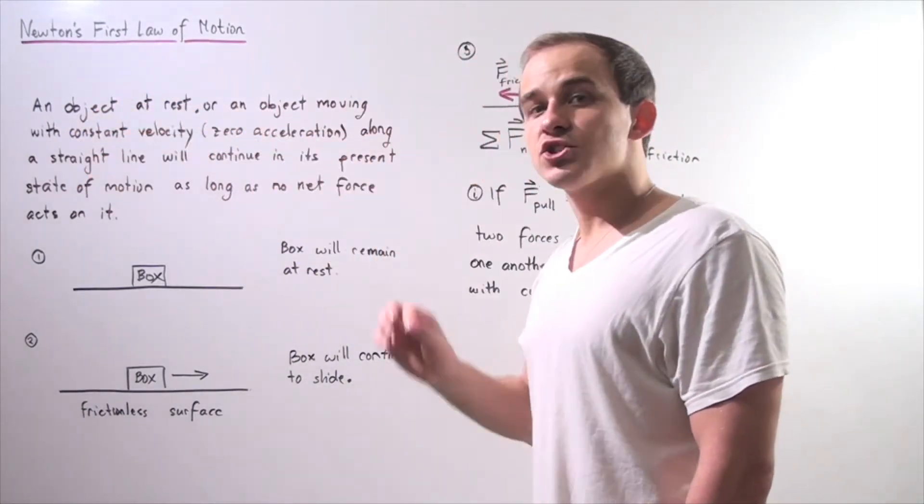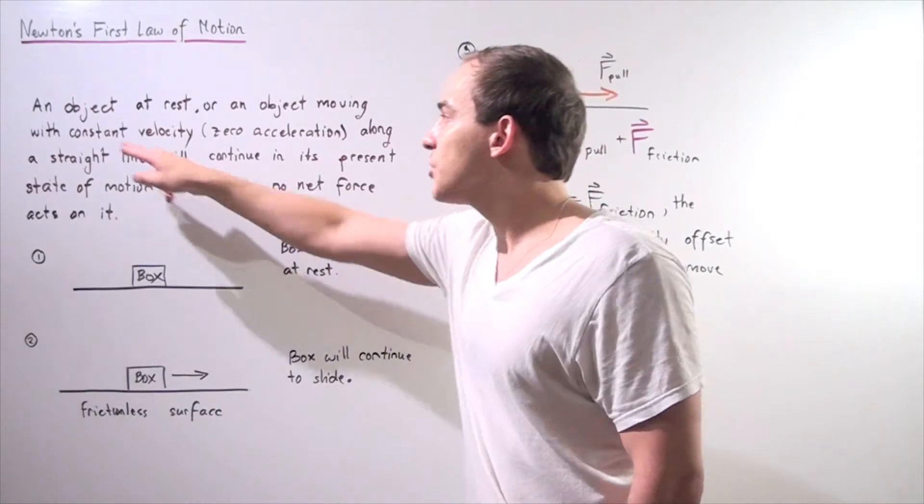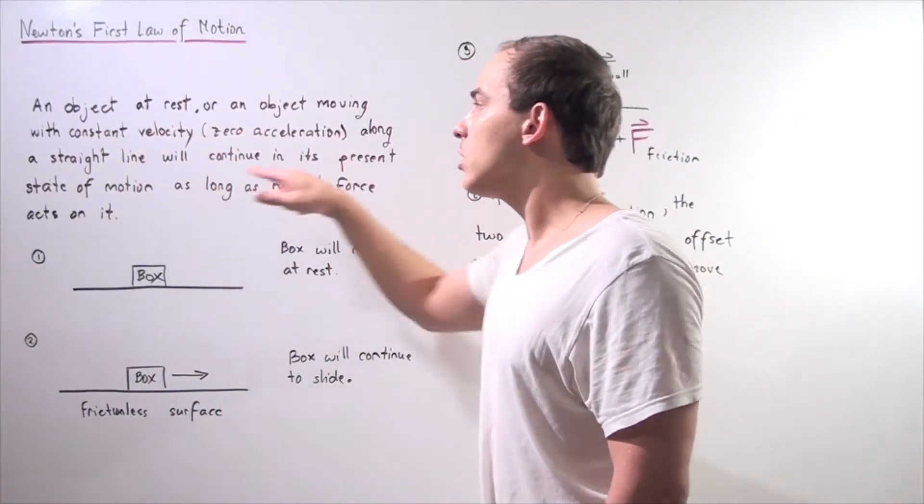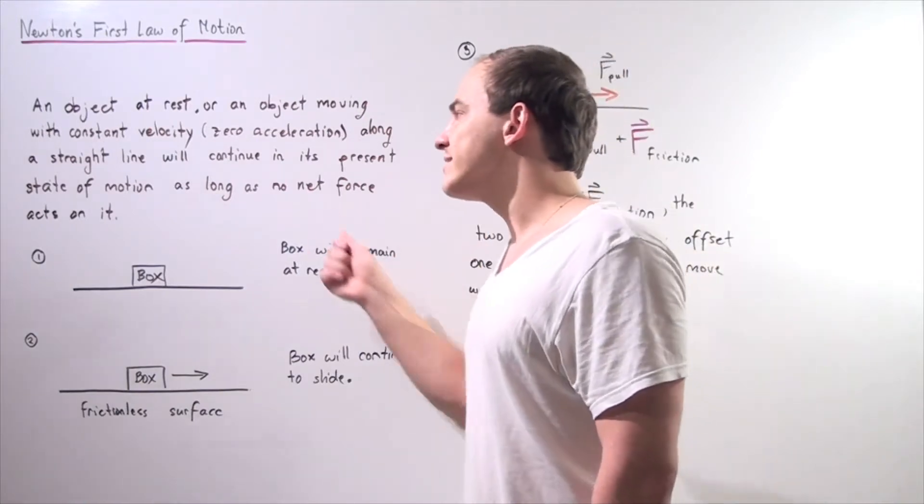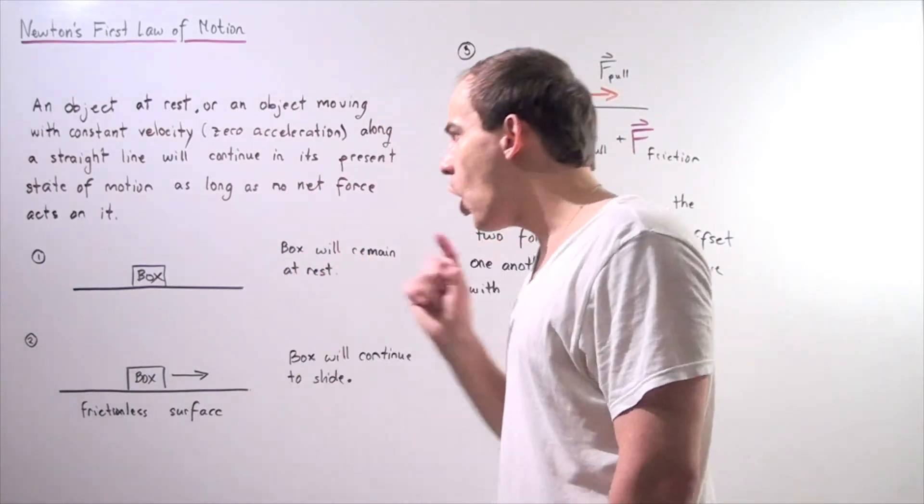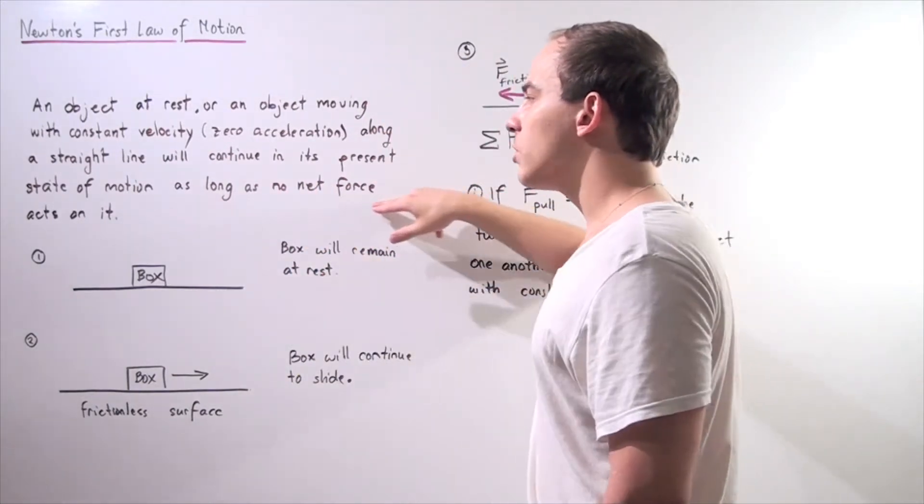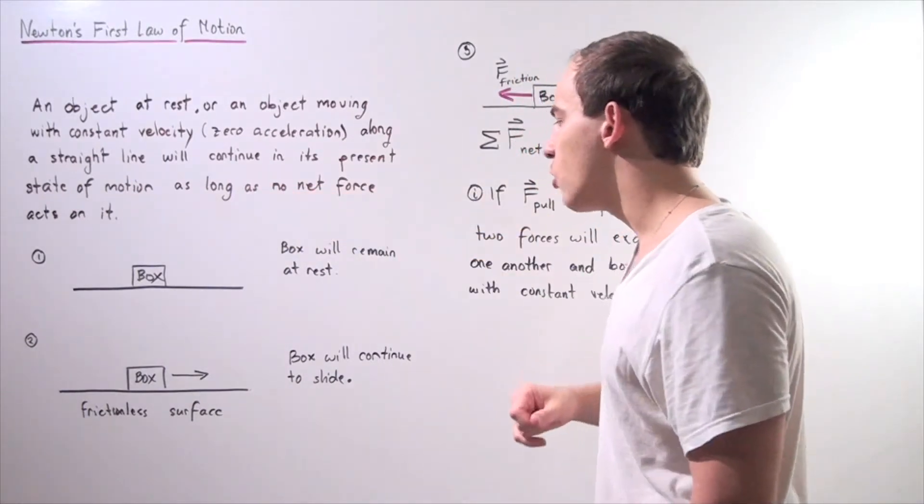An object at rest or an object moving with constant velocity along a straight line will continue in its present state of motion as long as no net force acts on that object.